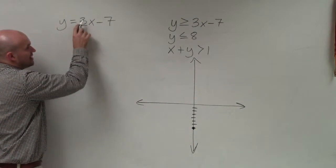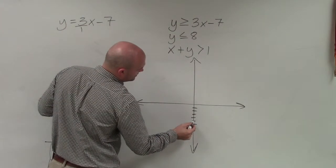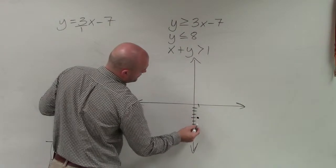Now I'm going to follow the slope, which is positive 3 over positive 1, to find the next point on my graph, 3 over 1.